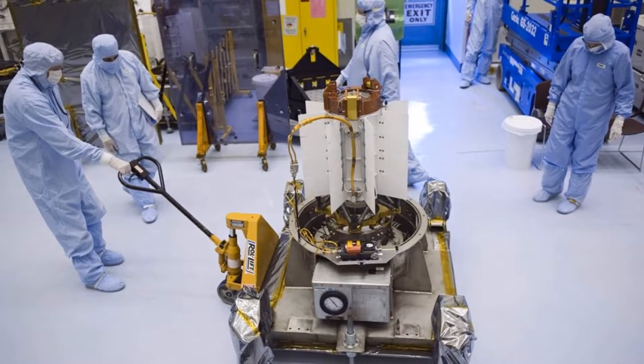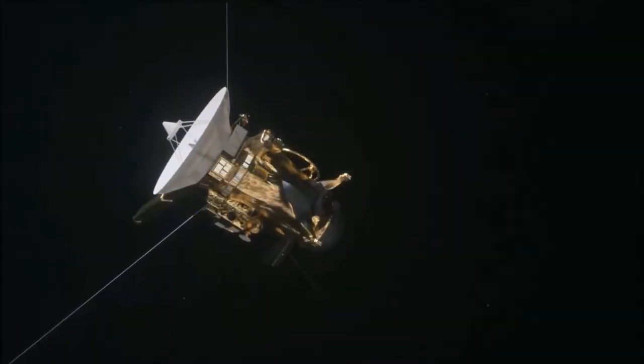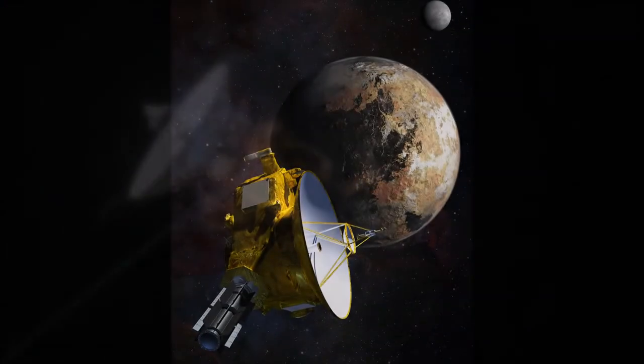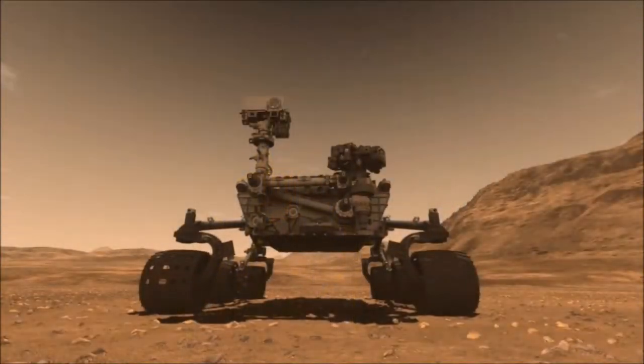Some examples of space missions that use RTGs are the Cassini spacecraft, the New Horizons spacecraft, and the Curiosity rover.